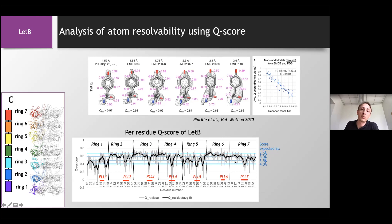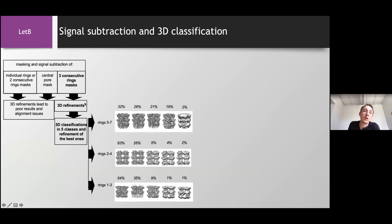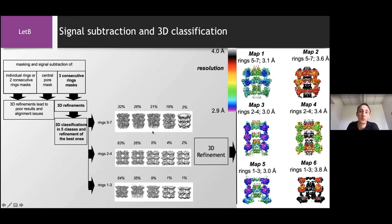So to try to push the resolution, the local resolution, a bit further, we used some masking and signal subtraction tools of Relion. And we explored different strategies, different types of masks. For example, masking individual rings, or masking two consecutive or three consecutive rings, or masking only all the pore lining loops. And the maps where the information was the most useful were when we used three consecutive ring masks. And here you have a few examples of the 3D classification that we did after signal subtraction. In all these maps that we obtained, we selected six where there was meaningful information. Six maps here where you have the example on the right hand side where the resolution ranges from 3 to 4 angstroms. And the same here, the difference between the maps on the left hand side and the right hand side is the conformation. So the ones on the left hand side are what we call the closed conformation and the one on the right hand side it's the open conformation.